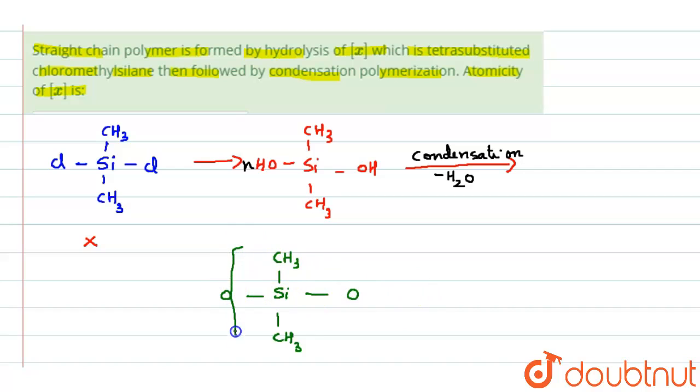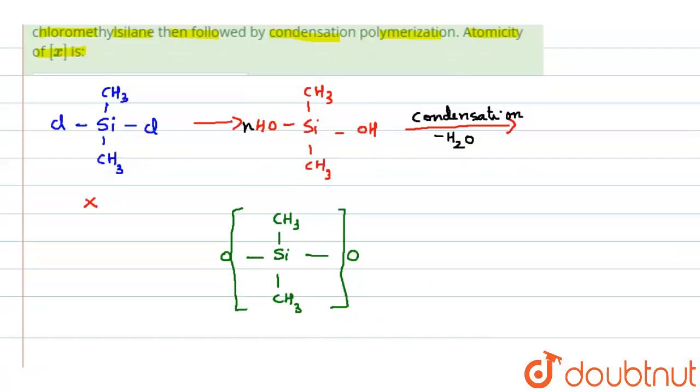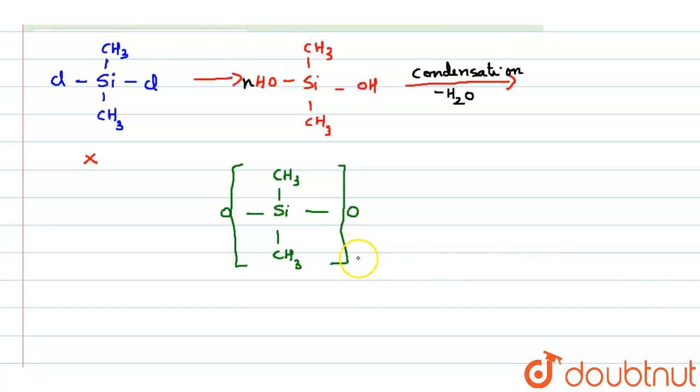Continuously this chain is going to form into n minus 1 time because this is again going to connect it to silicon CH3 and CH3, and over here O minus. This is also O minus. So over here, if you see, they are asking about x.